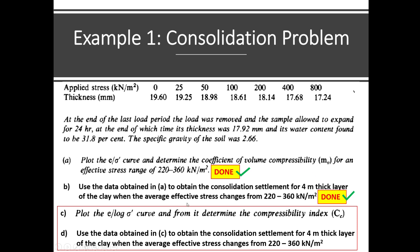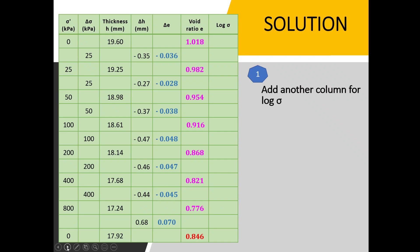In this video we will continue with points c and d. We need to plot e versus log effective stress, determine the compression index, and then obtain the consolidation settlement. We are still using the same data and the same table, but we need to add another column for log stress.